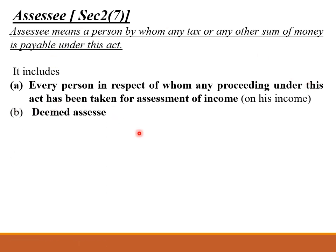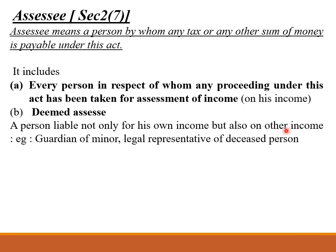Second is Deemed Assessee. Deemed Assessee means a person who is liable not only for his own income but also for other income. For example, when he is a guardian of a minor or a legal representative of a deceased person. In that case, a person is not liable for his own income but liable for somebody else's income. That is known as Deemed Assessee.